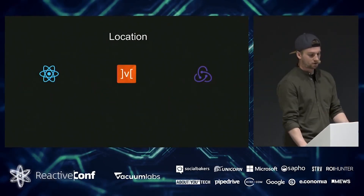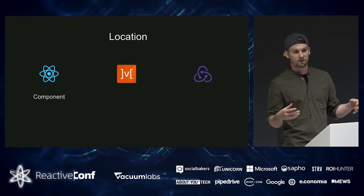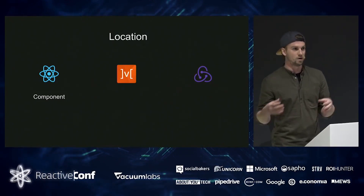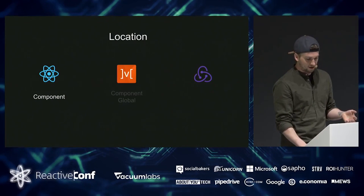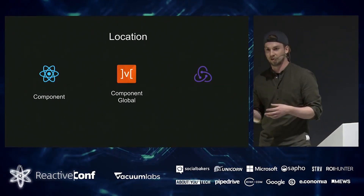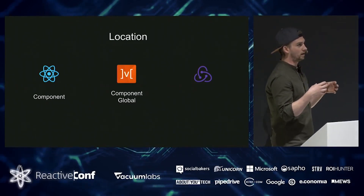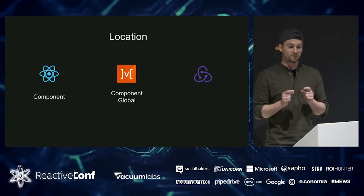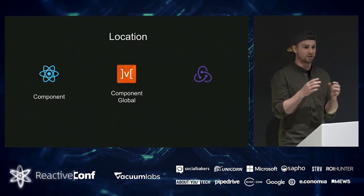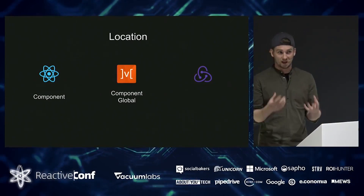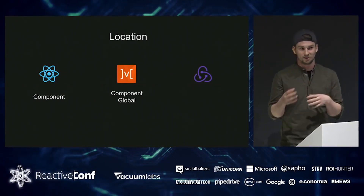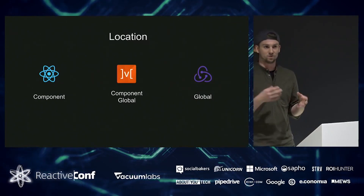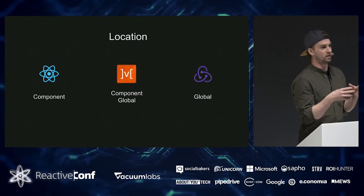Talking about the location of your state: in React, state lives in the components, and even though every component can have its own state, you have one single source of truth. That can also be true for MobX — you can have state globally, locally in a component, or have multiple stores, though that is not advised. MobX recommends having just one single store, same as Redux. Redux also has this one single store approach with one centralized way of storing your state. You can technically have multiple stores in Redux as well, but it is really, really bad practice.